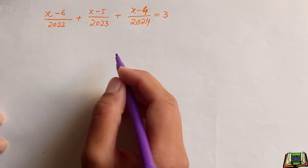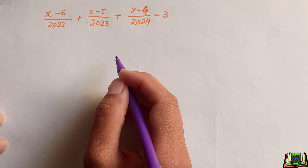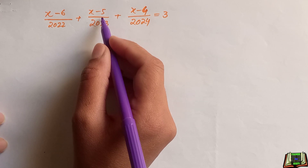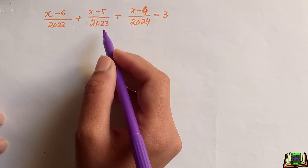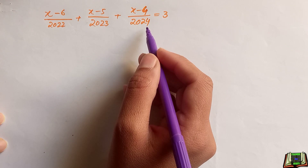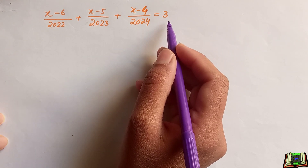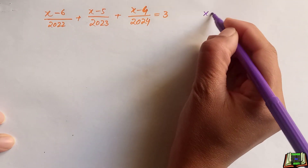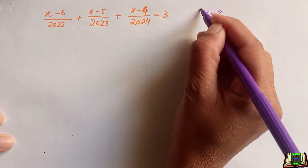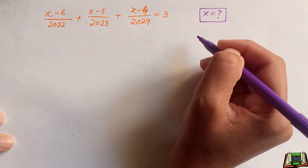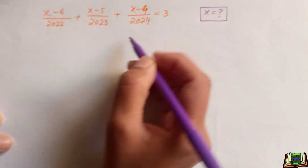Welcome back. Let's solve this olympiad question: if (x minus 6) divided by 2022, plus (x minus 5) divided by 2023, plus (x minus 4) divided by 2024 is equal to 3, then how can we find the value of x? Let's get started and see how we can find out the value of x in this question.